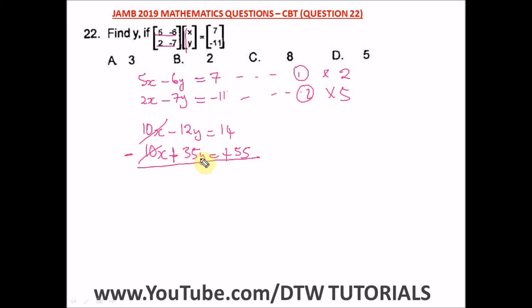We have -12 plus 35. If you still don't understand simultaneous equations, there's a video on the DTW Tutorials channel - I'll leave a link to that playlist at the end of the video, introduction to simultaneous equation explained. So -12 plus 35 will give us a positive since we have a big number here, so that's positive 23y. And here we have 14 plus 55, we're going to have 69.